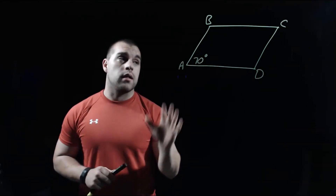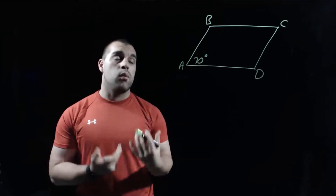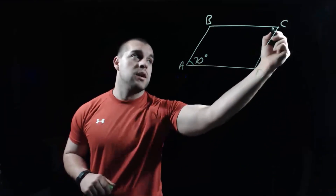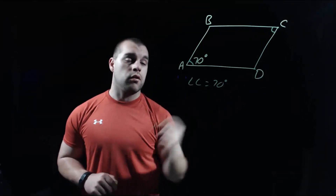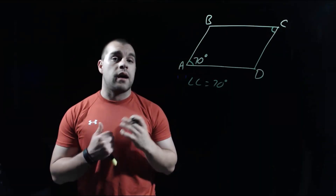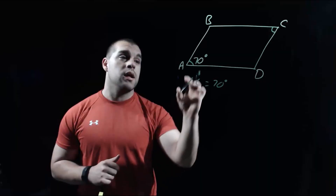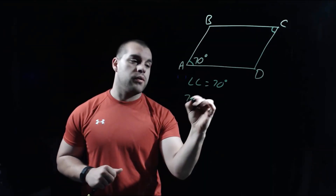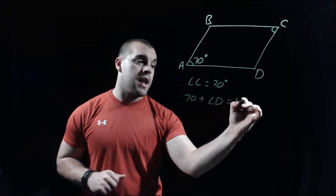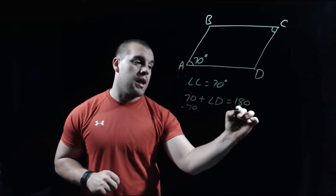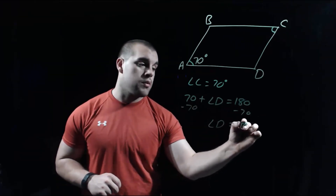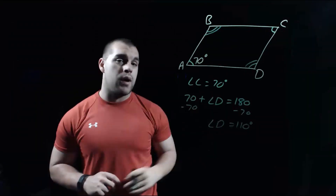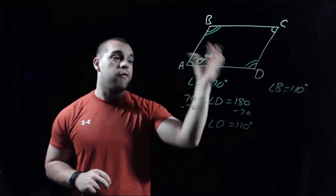We can do something similar looking at angles. In this parallelogram, angle A is 70 degrees, and we want to figure out the measures of the other angles. Using the property that opposite angles are congruent, angle C also equals 70 degrees. Using the property that consecutive angles are supplementary, angle A plus angle D equals 180 degrees. Subtracting 70, angle D equals 110 degrees. Since opposite angles are congruent, angle B also equals 110 degrees. So there are all four angles of our parallelogram.